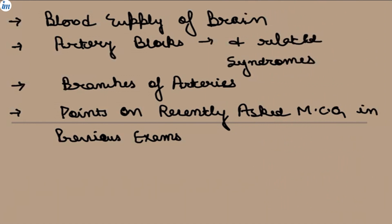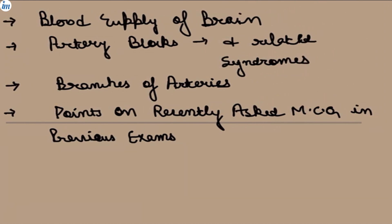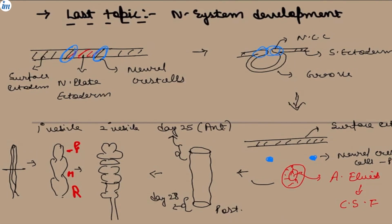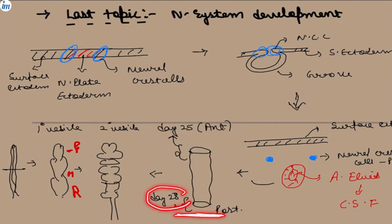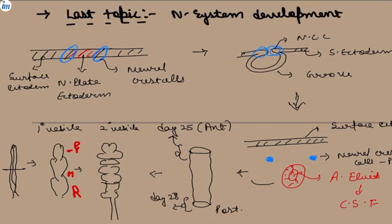Before we move to the blood supply of the brain, let us revise the previous section on nervous system development. The neural plate ectoderm from the notochord keeps proliferating to form the neural groove, which then forms a neural tube. The neural tube has two openings: the anterior neural pore, which closes on day 25, and the posterior neural pore, which closes on day 28 of embryological development. If they do not close, it leads to open neural tube defects.